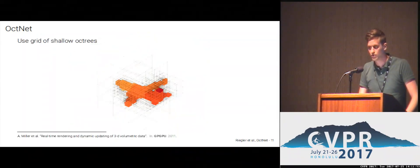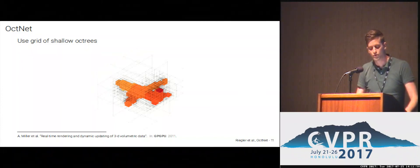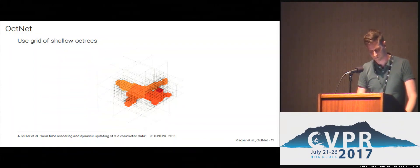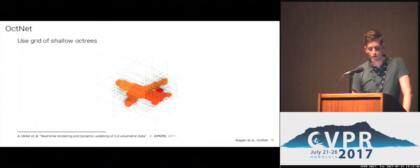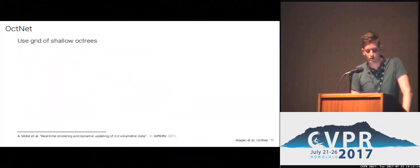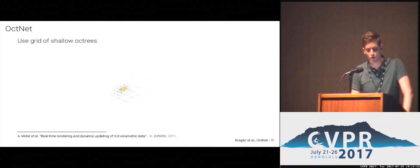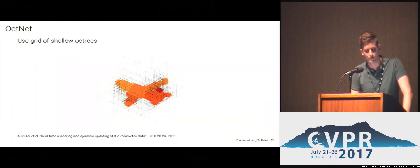In OctNet, we use a space partitioning function within the network architecture — specifically, an octree, where an octree cell can cover multiple voxels farther away from the surface, and finer octree cells cover voxels near the surface. More specifically, we use a grid of shallow octrees. A shallow octree is an octree with a fixed depth, covering a fixed number of voxels. Placing several of these in a grid structure allows us to cover the whole volume quite efficiently.